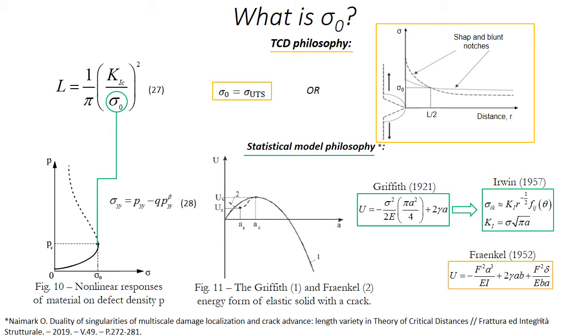Function (28) determines the equilibrium state of the considered system in the phase space stress-defect-induced strain. The extremum of this function corresponds to the value of the stress at which the unlimited growth of defects begins. This stress value can be associated with the inherent material strength introduced in the framework of the theory of critical distance. This assumption can be substantiated using the energy approaches of Frenkel and Griffith.